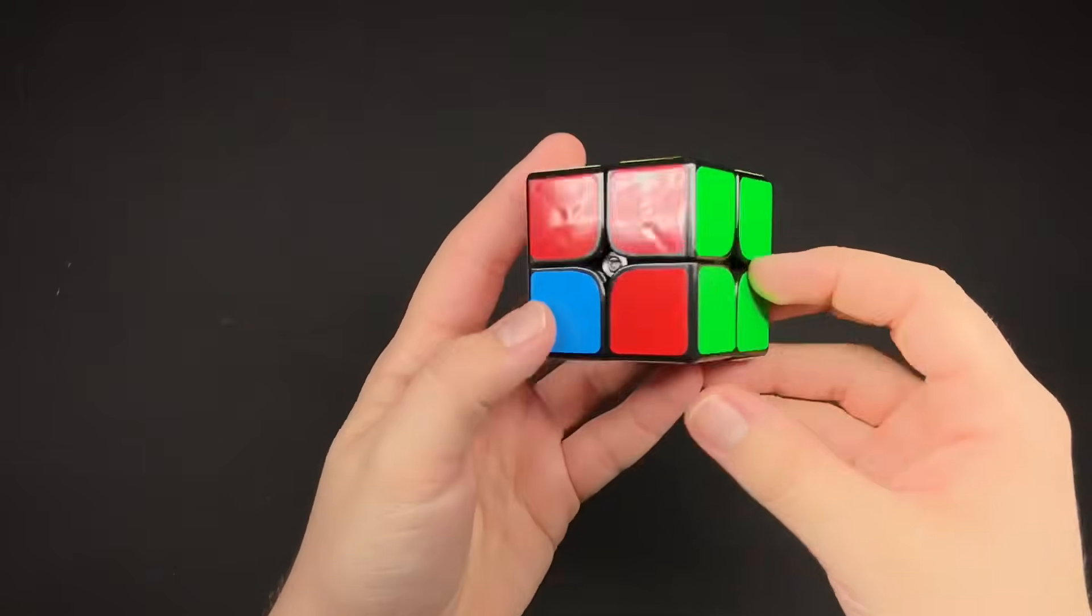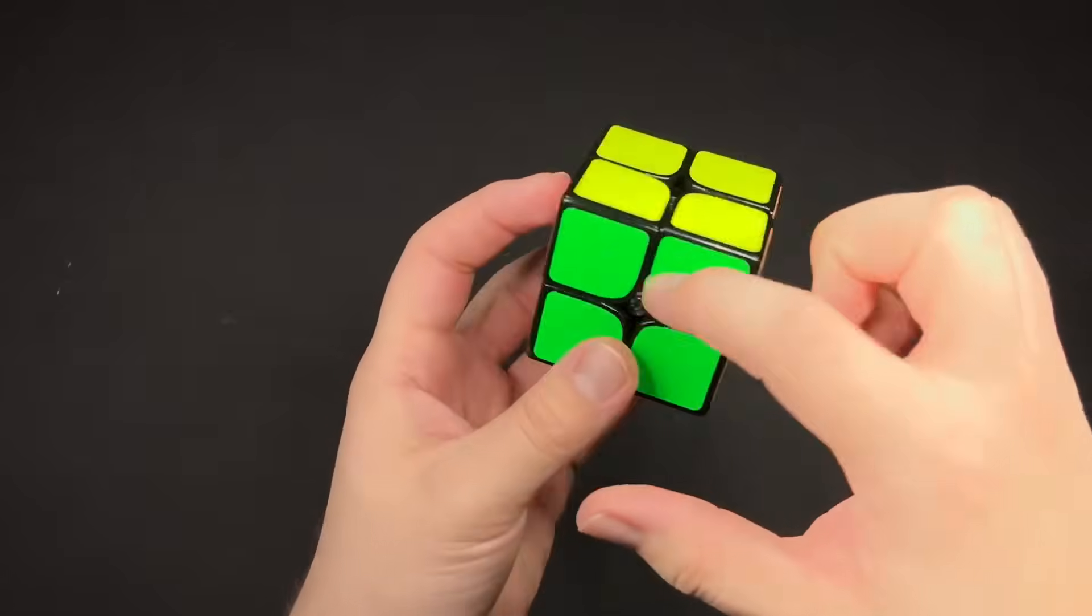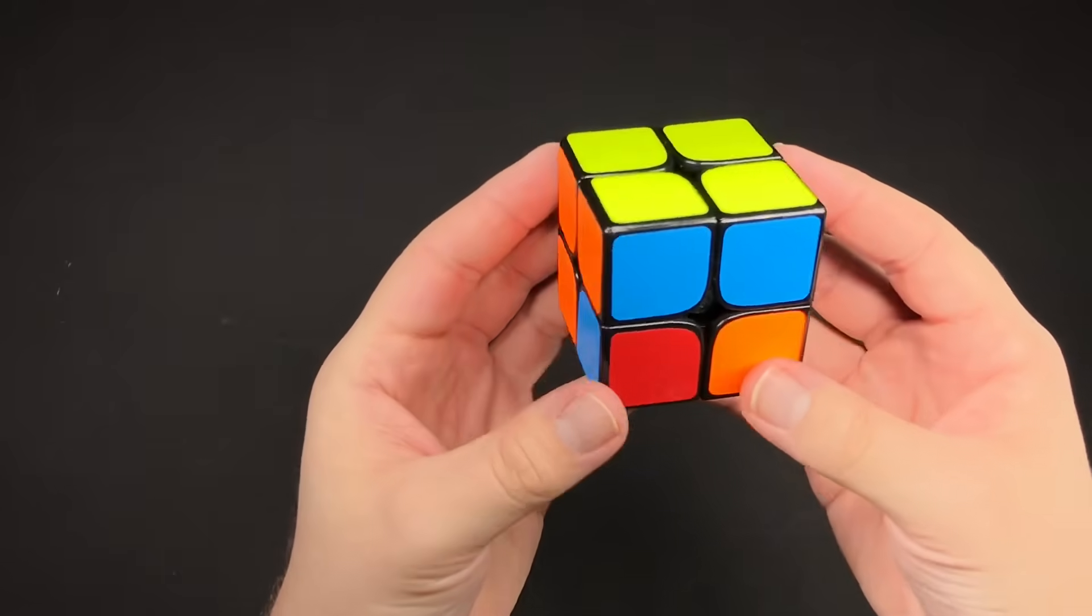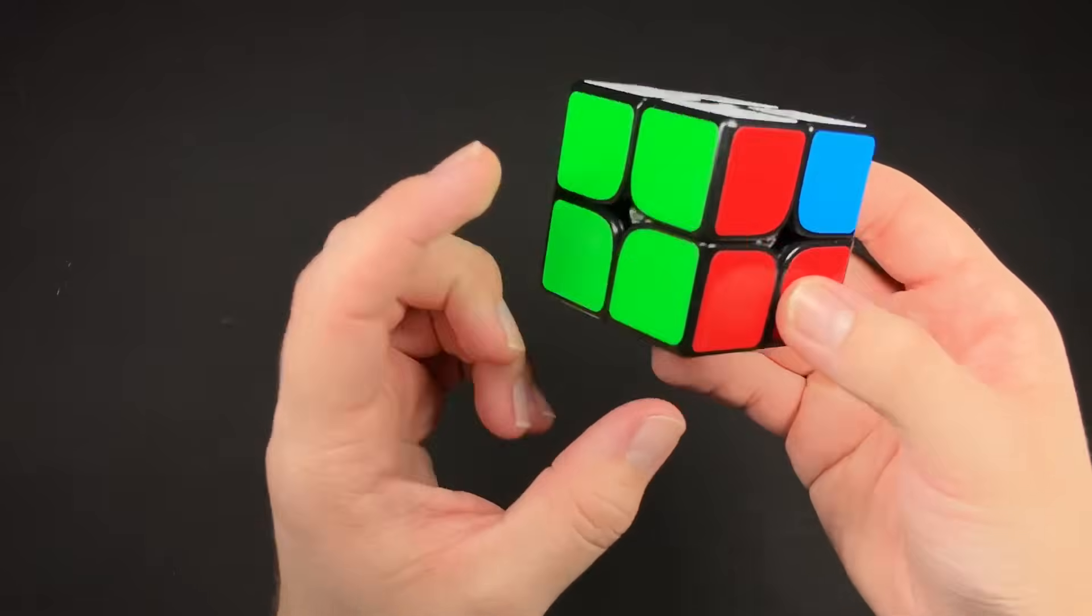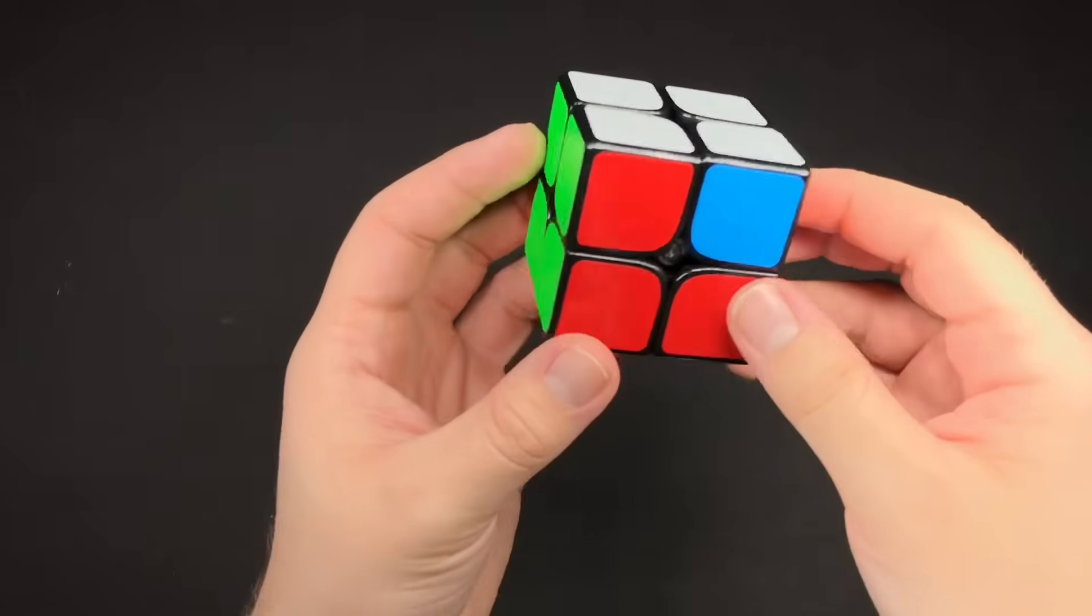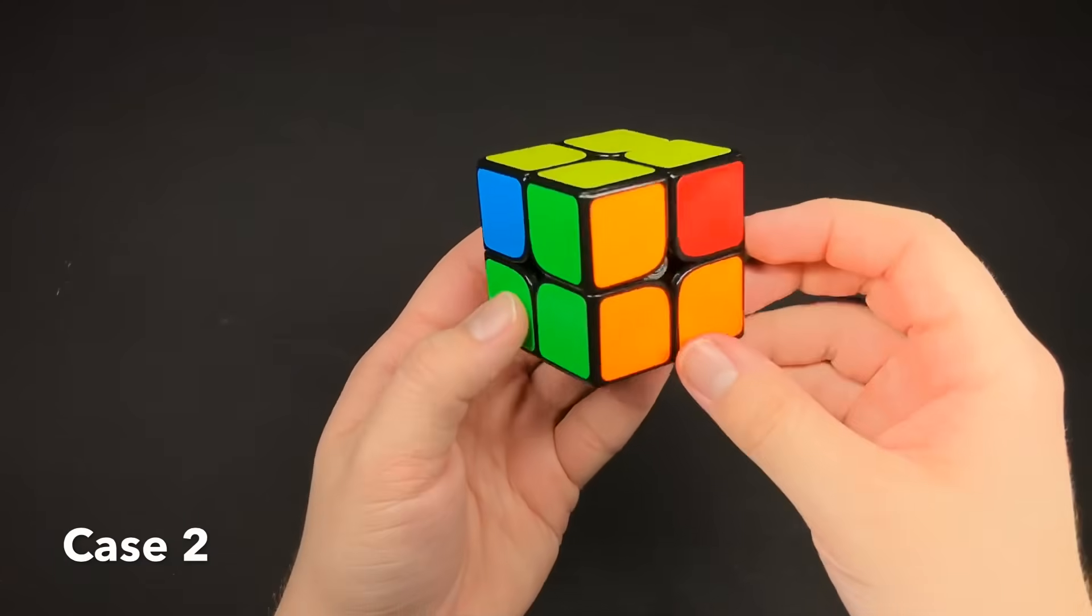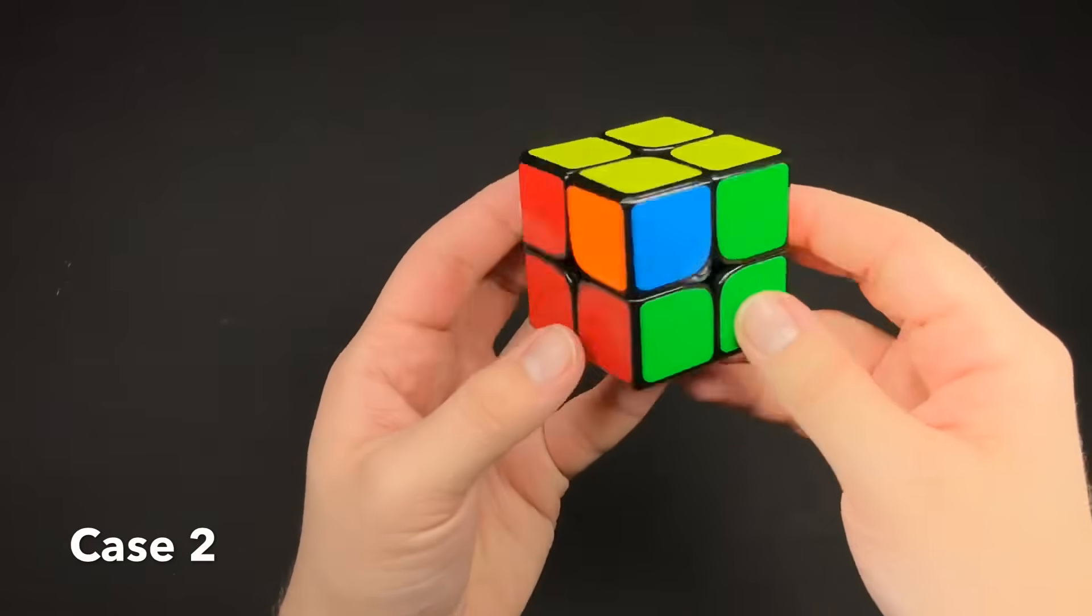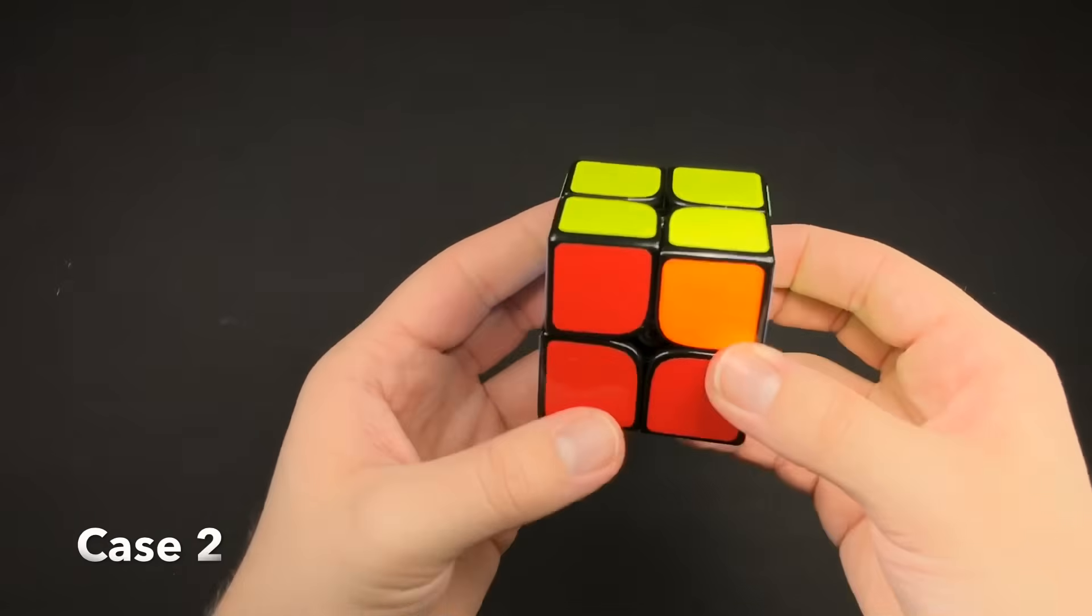There's this case, which on the bottom you have two in a bar and then on the top side is completely solved. There's actually not a different algorithm. You would just flip the cube over, and now it's the same case as the first one. And then this case would be the bottom side solved and then no colors are matching on the top. It doesn't matter where you hold it, and you do this algorithm.